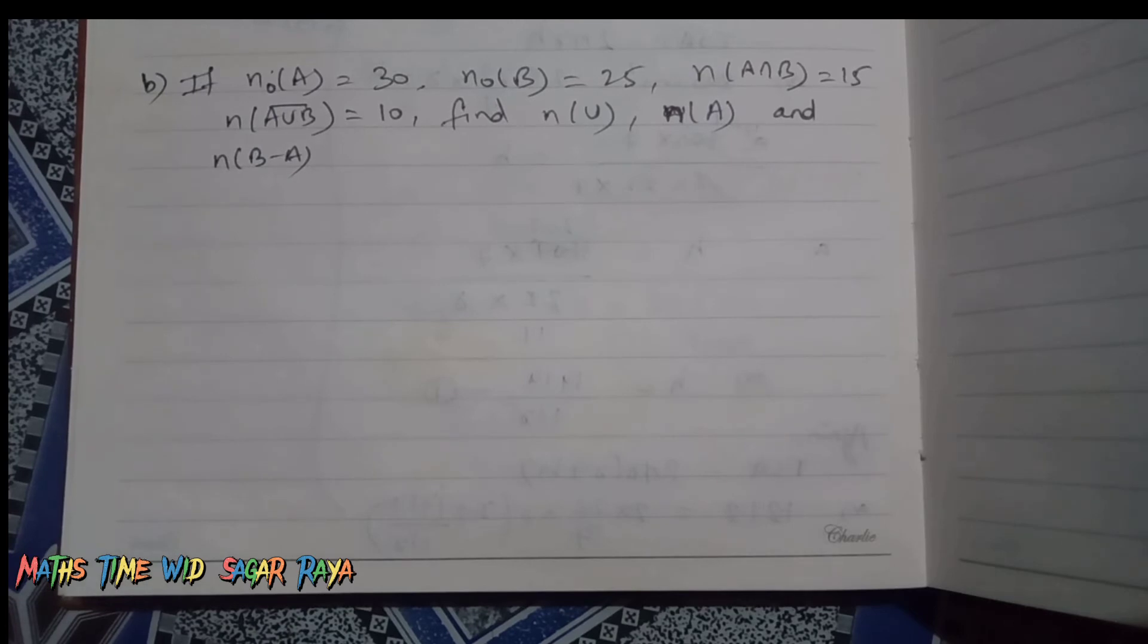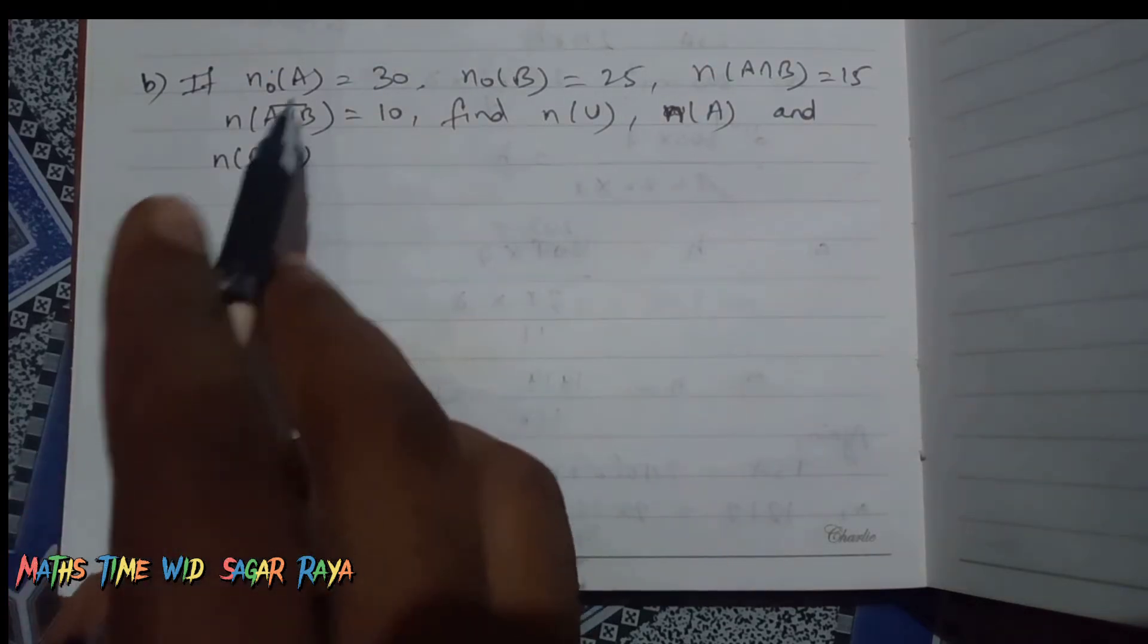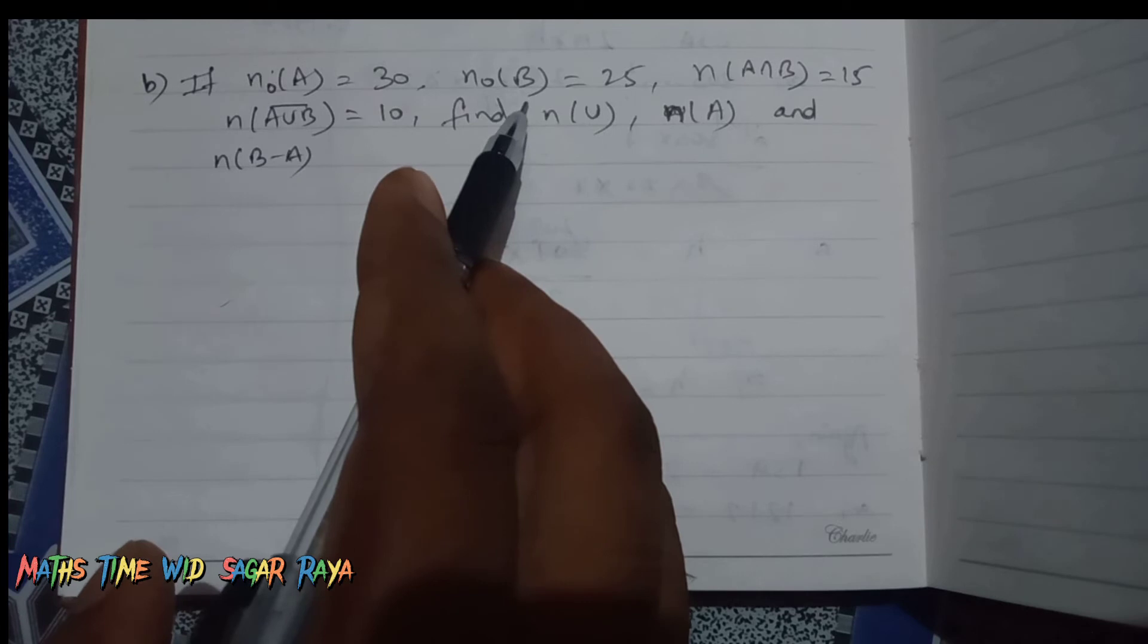Hello friends, welcome to my channel Math Time with Sagar Raya. Today I am back with another question from chapter set. In the screen you can see the question. If n(only A) = 30 and n(only B)